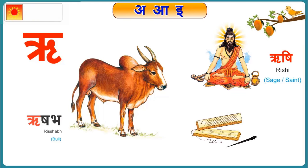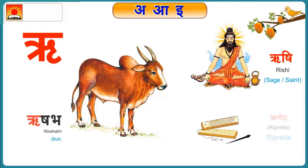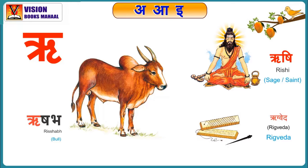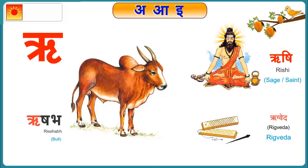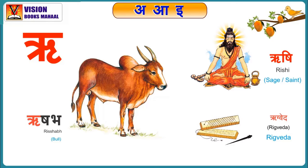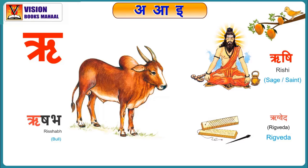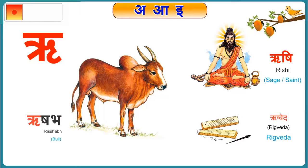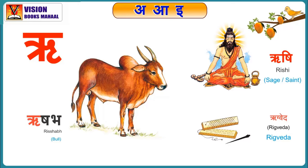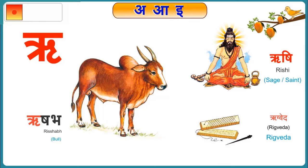What is this? This is Ved. There are four Vedas — the first one is called Rig Vedh. Now you say: Ri say Rig Vedh. Ri say Rig Vedh.